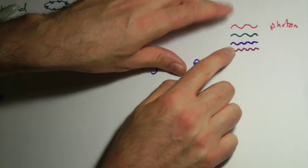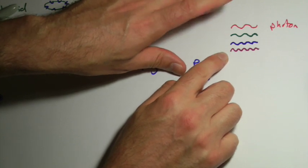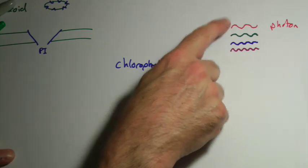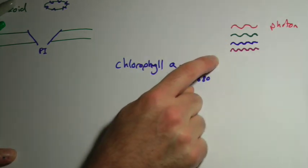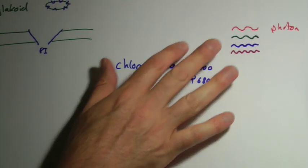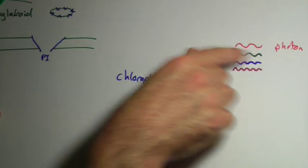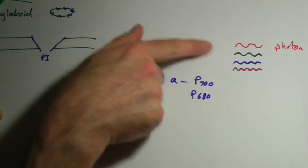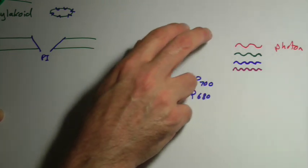Now, the photons themselves are not actually colored. When they hit the back of our eye, the retina, we interpret those wavelengths as colors. But really, it's better to think of it just as a wavelength.